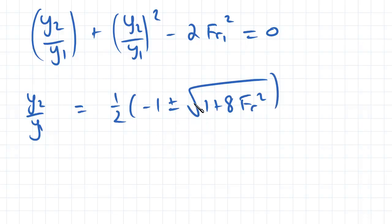And then what we also know is that y2 over y1 must be positive. We always need to go from a flow that is shallow to a flow that is deep. So that means that y2 over y1 must be equal to one half times minus 1 plus the square root of 1 plus 8 times the Froude number squared.